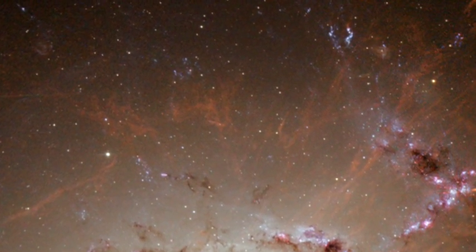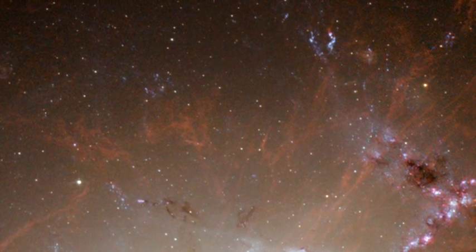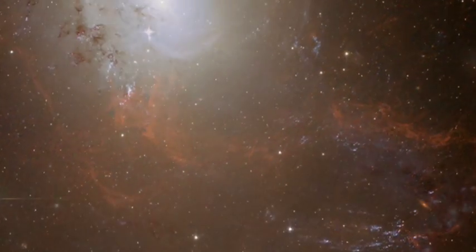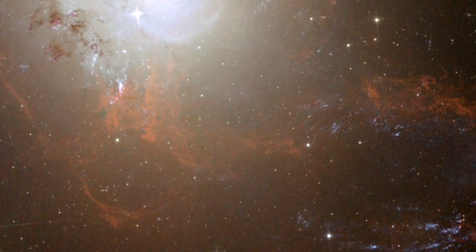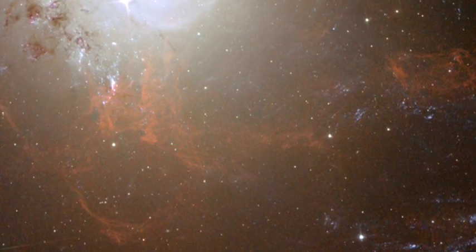How is it possible that these delicate filamentary structures can survive in the hostile high-energy environment of the galaxy cluster for so long? Either they should have heated up, dispersed and evaporated in a very short period of time, or if they're somehow shielded, they should have collapsed under their own weight and formed stars long ago.